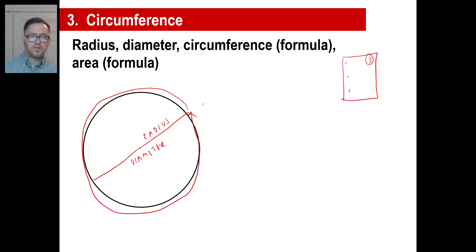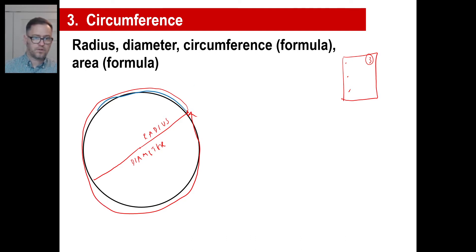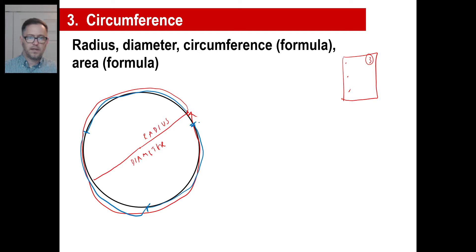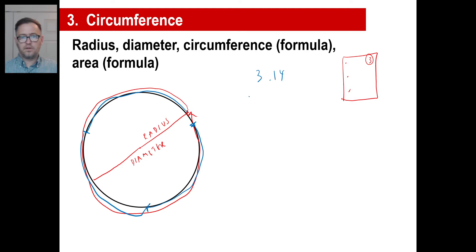At some point in history, somebody took a circle and measured the diameter, then stretched that diameter around the circle to see what happens. They found that the diameter went around three times, and there was always a little left over — they figured out that amount was about 0.14, keeping going. There is a term for the number of times a diameter goes around a circle, and it's called pi.